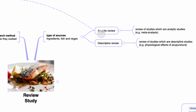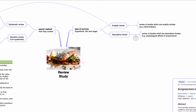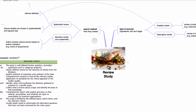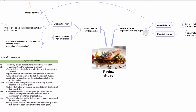For example, a meta-analysis is an analytic review — this type of title can easily be seen in PubMed or other search engines. Another example is 'Physiological effects of acupuncture,' which conveys informational content about what kind of physiological effect acupuncture has. These are all review studies, and they differ based on how they were constructed.